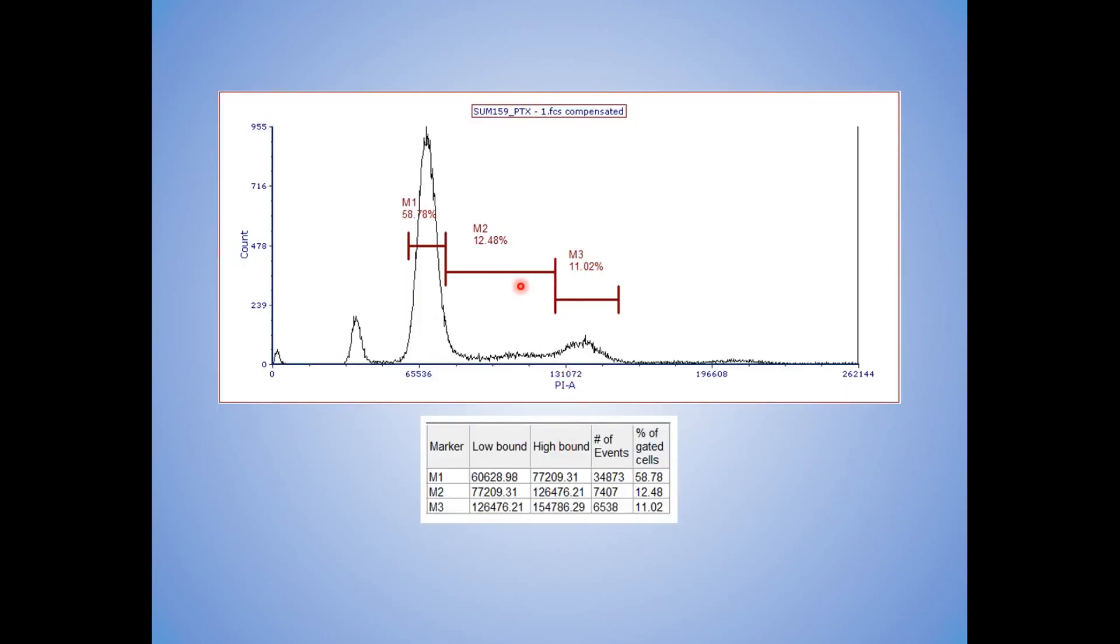Here's a sample file that I have from the core and I'm basically doing region analysis. I've got M1 for G1, G2, G1, G0, M2 for S, M3 for G2M.